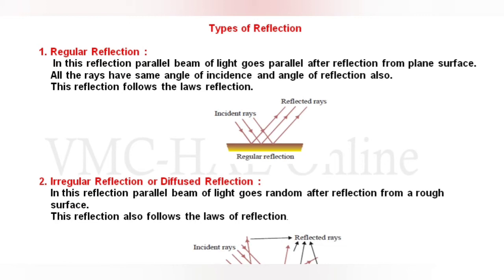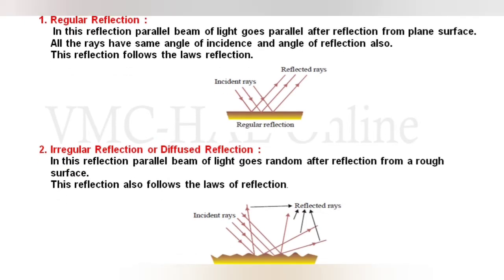There are mainly two types of reflection. First is regular reflection. If parallel incident rays fall on a polished surface and after reflection the reflected rays are also parallel to each other, this type of reflection is called regular reflection. A 100% smooth surface produces regular reflection, and this reflection follows the laws of reflection.